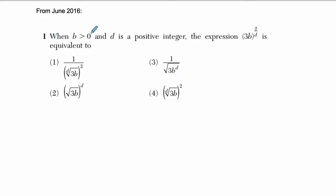Okay, so this says when b is greater than zero and d is a positive integer, the expression 3b to the power of 2 over d is equivalent to which of these?